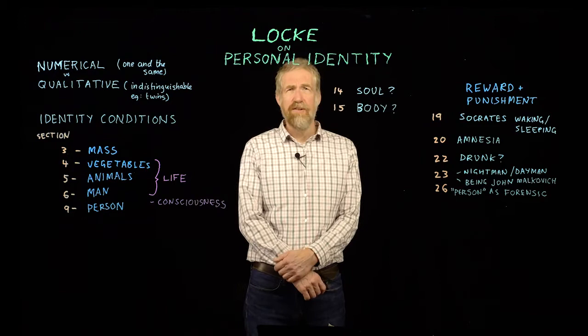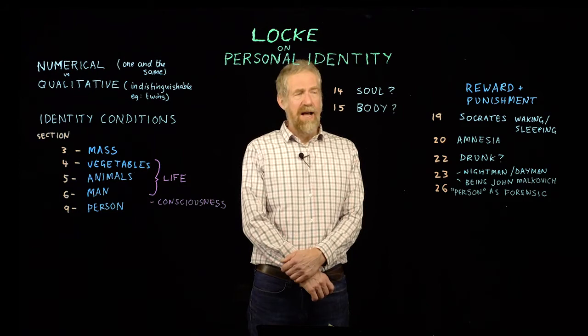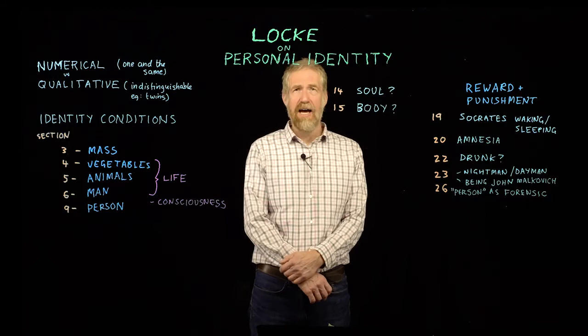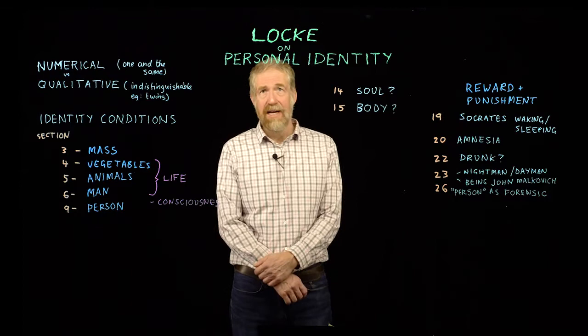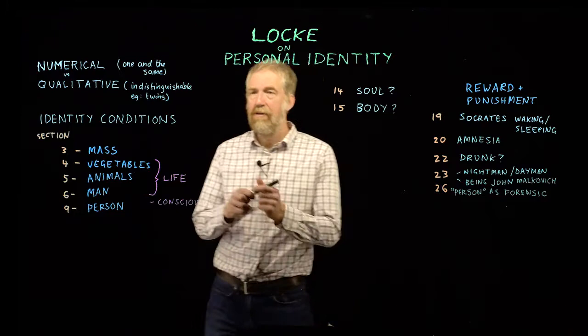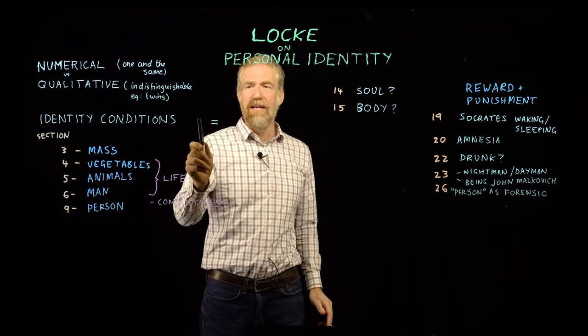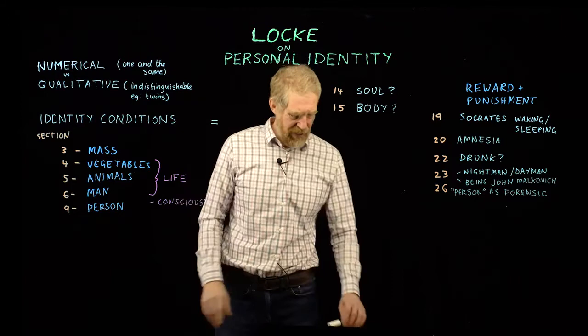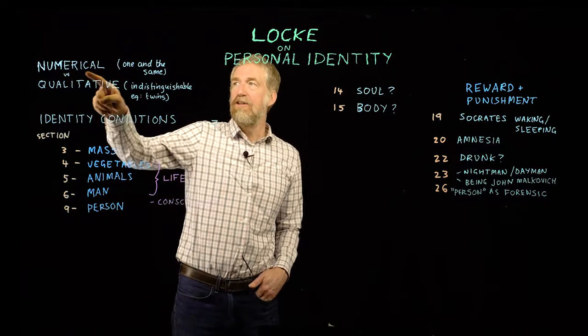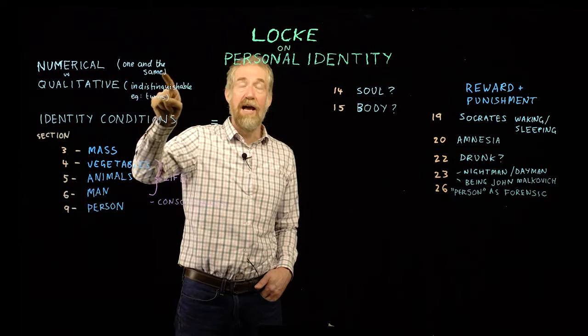So what is the issue of personal identity? Well, before you can talk about personal identity, you have to say a little bit about identity in general. One way to think about identity is in terms of the equal sign. When we use this, we mean that the thing on one side of it is the same thing as the thing on the other side - like Bruce Wayne equals Batman. That is called numerical identity. When things are numerically identical, we say that they are one and the same.